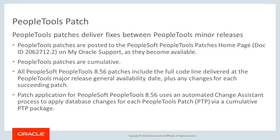In prior releases, PeopleSoft PeopleTools patches included only the cumulative changes made for the patches. All PeopleSoft PeopleTools 8.56 patches include the full code line delivered at the PeopleTools major release general availability date, plus any changes for each succeeding patch. Change Assistant provides an automated process to apply database changes for each PeopleTools patch via a cumulative PTP package.